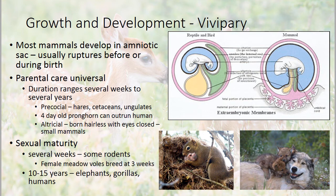In mammals, parental care is universal — all mammals take care of their young, but it depends on how long, ranging from a couple of weeks to several years. Precocial mammals are born and are walking within a couple of hours, running, and getting their own food. Hares, cetaceans (marine mammals), and ungulates are precocial. For example, a four-day-old pronghorn can outrun a human.